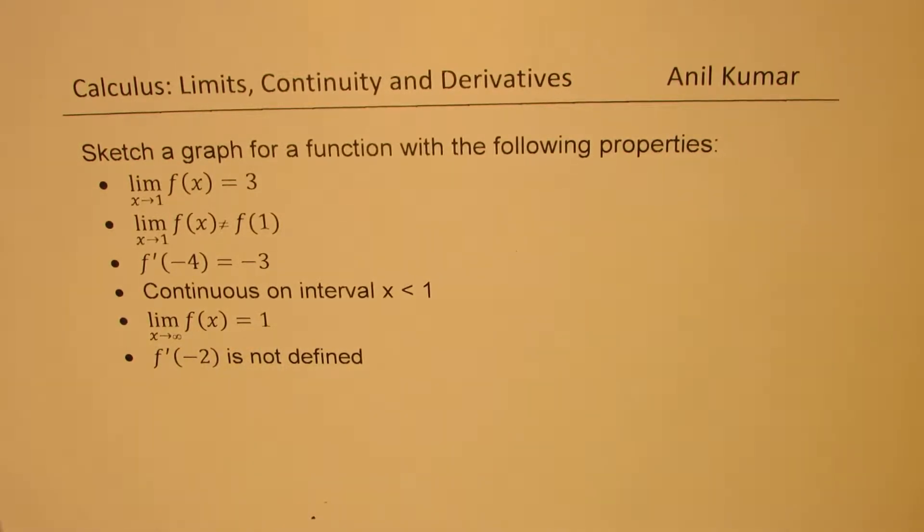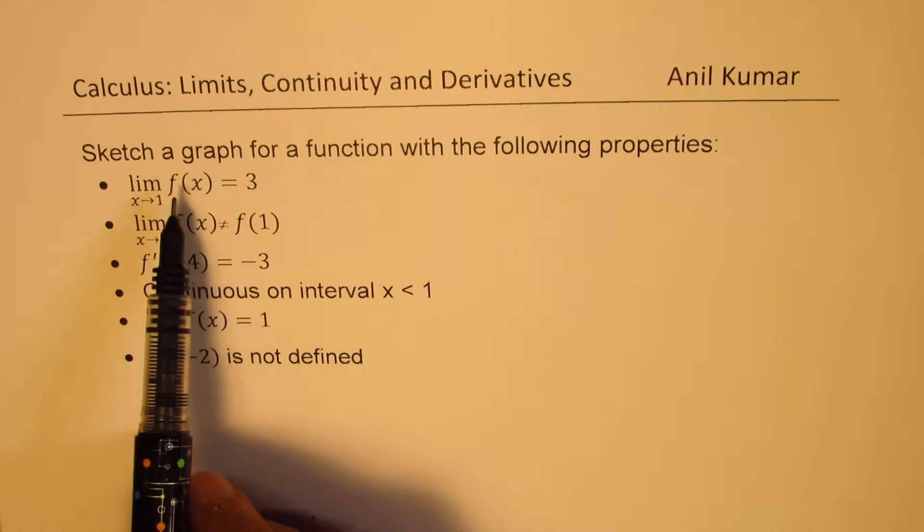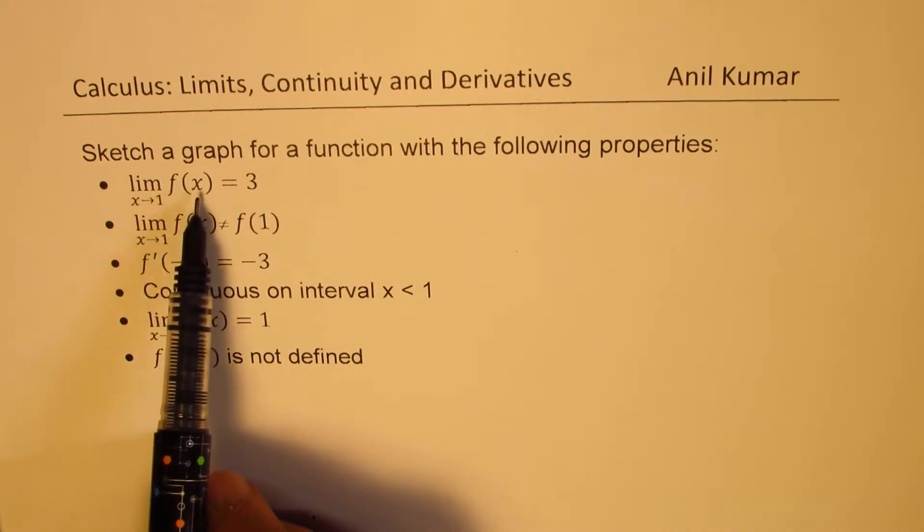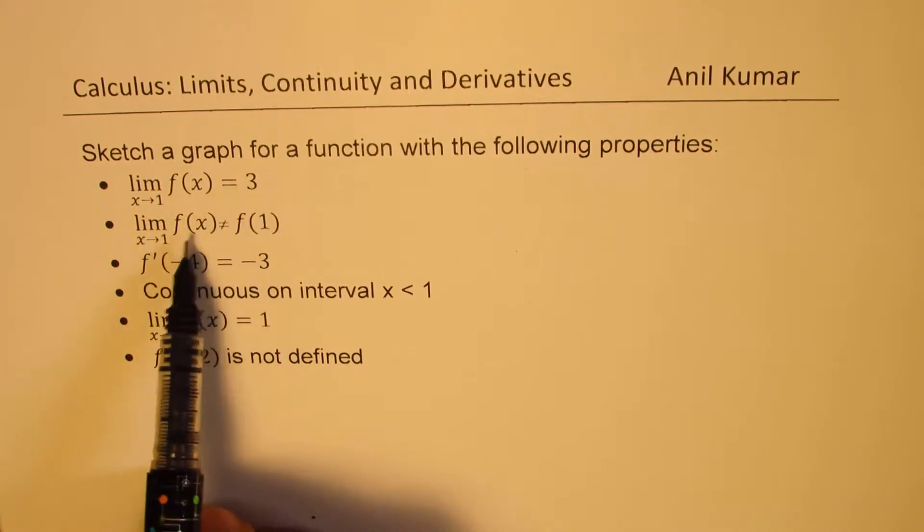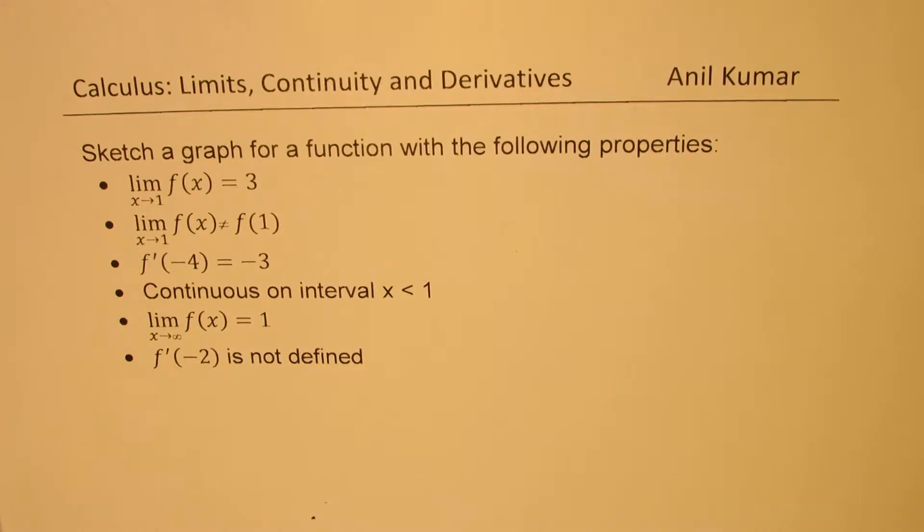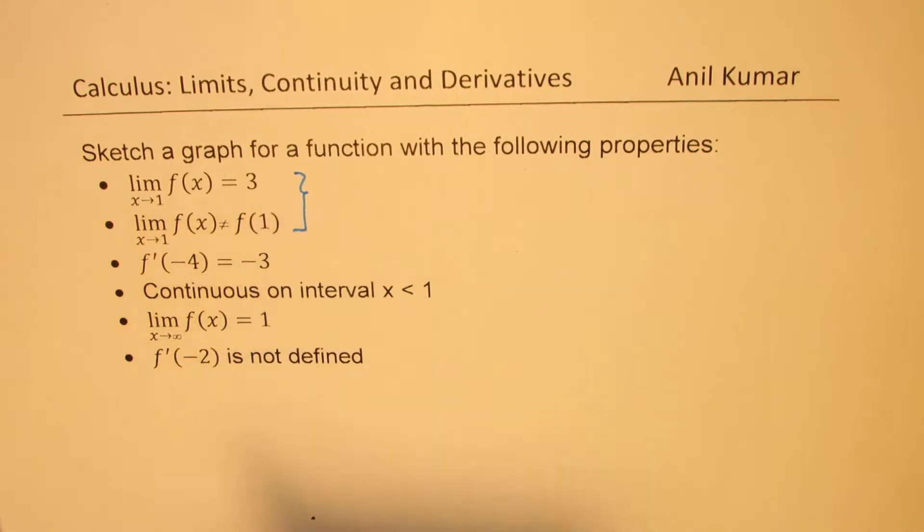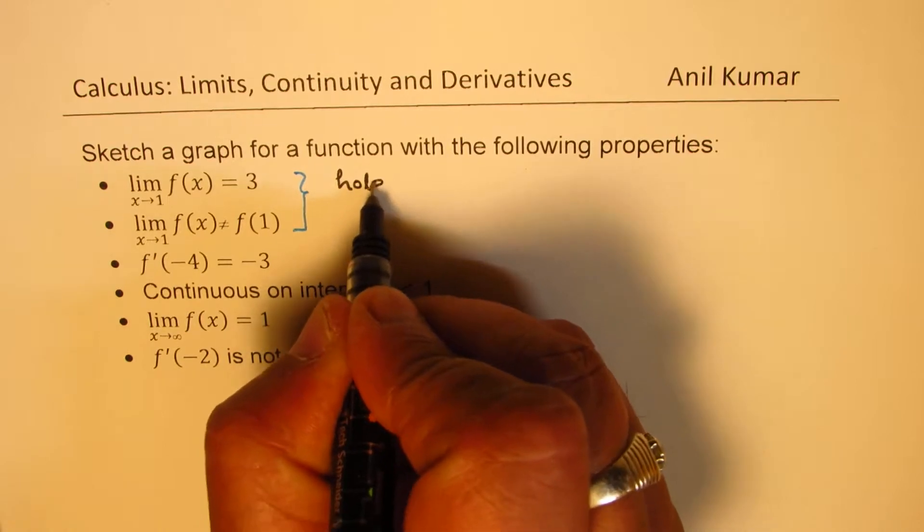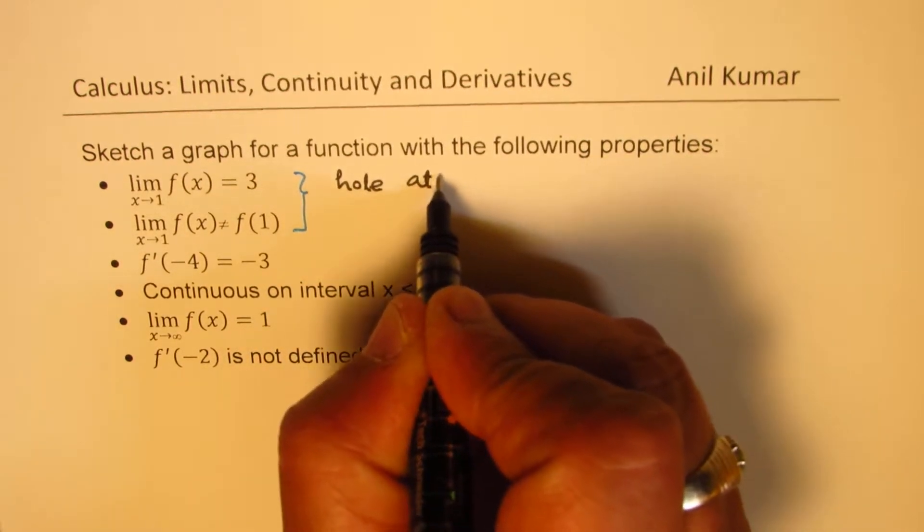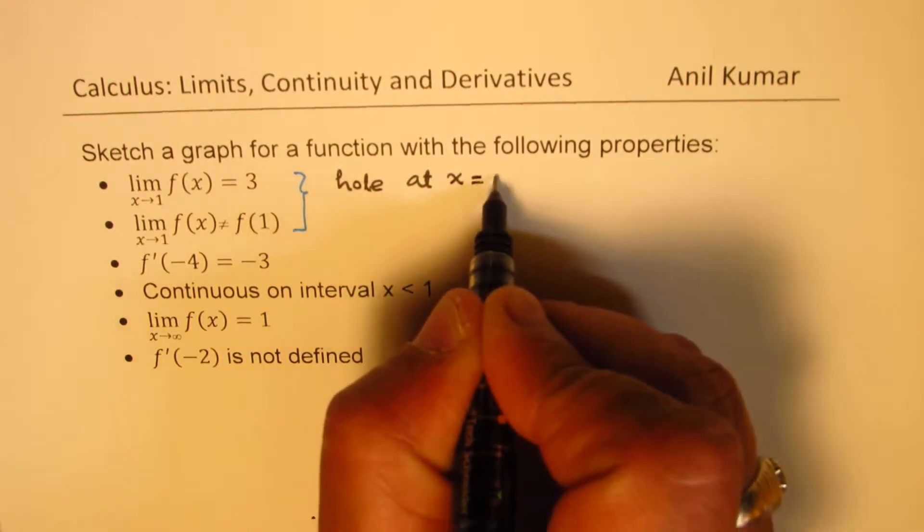And the derivative of the function at minus 2 is not defined. So let's try to understand all these conditions. The very first one says that the limit of the function at x equals 1 is 3, and the second one says that it is not equal to the value of the function.